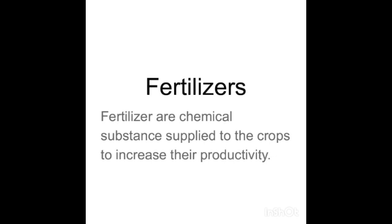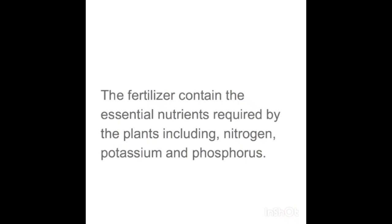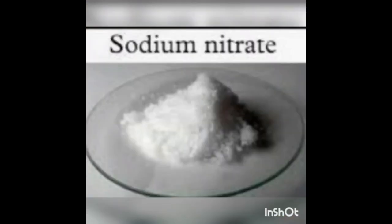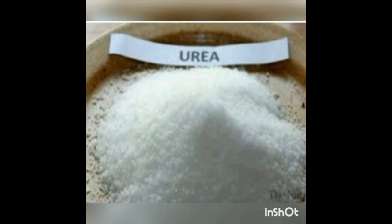Fertilizers are chemical substances supplied to crops to increase their productivity. They contain essential nutrients required by plants, including nitrogen, potassium, and phosphorus. Chemical fertilizers include ammonium nitrate, ammonium sulfate, calcium nitrate, potassium sulfate, sodium nitrate, and urea.